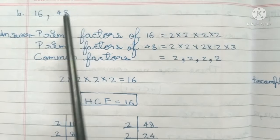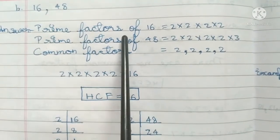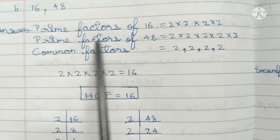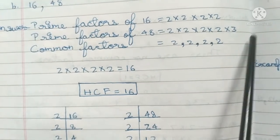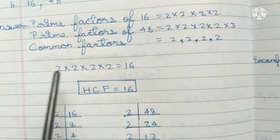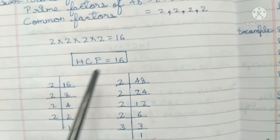Second one: 16 and 48. Answer: prime factors of 16 are 2×2×2×2; prime factors of 48 are 2×2×2×2×3. Common factors are 2, 2, 2, 2, which is 16. HCF is 16.